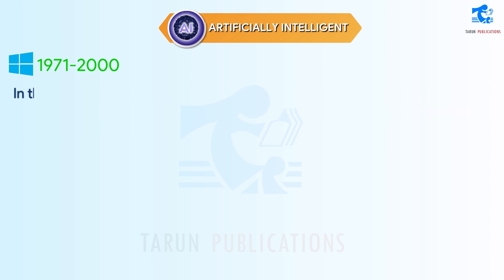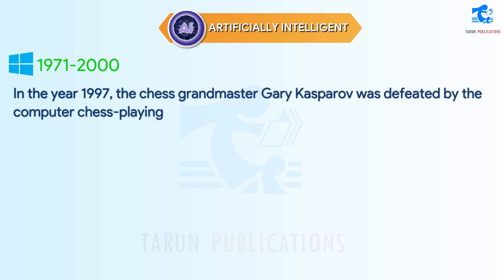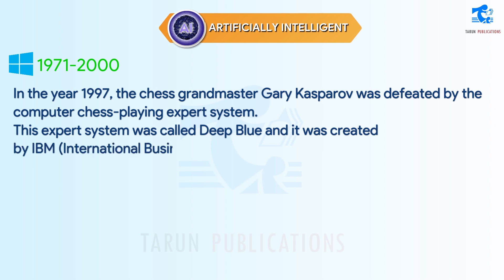In the year 1997, chess grandmaster Garry Kasparov was defeated by a computer chess-playing expert system. This expert system was called Deep Blue, and it was created by IBM, International Business Machines.